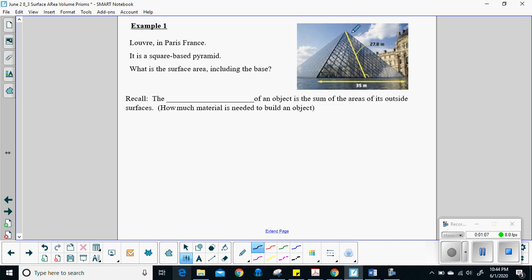So let's do some solving. So let's see, we've got the Louvre, I don't know how to pronounce that, in Paris, France. It's a square-based pyramid, so we just have two pieces of information we need to know. We want to figure out what the surface area is, including the base. We're going to include the floor and the walls.